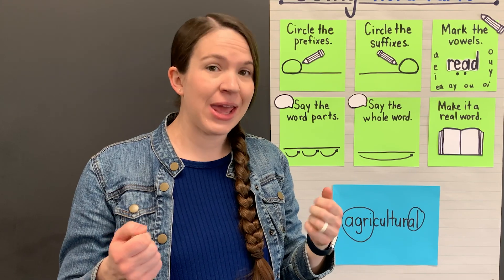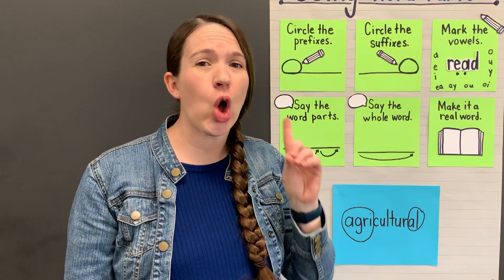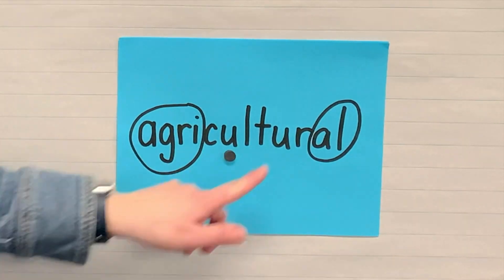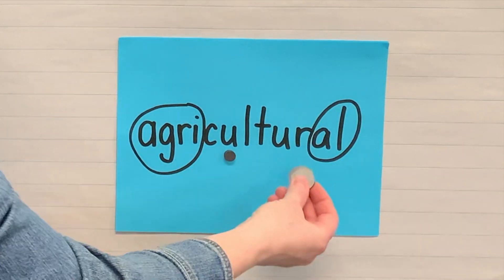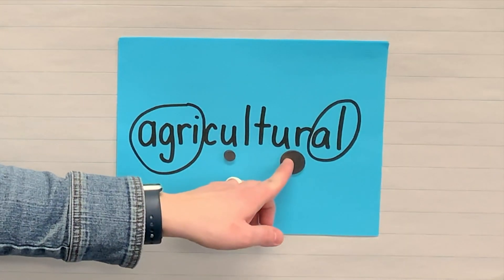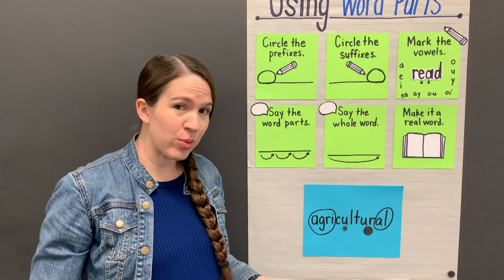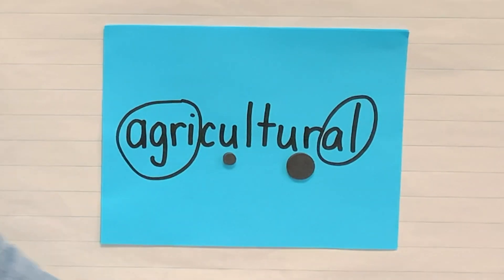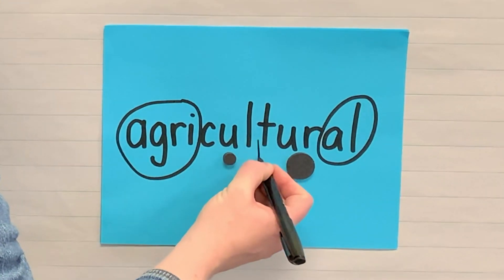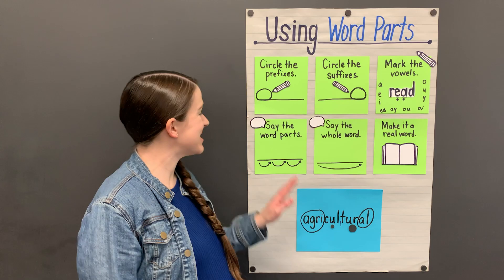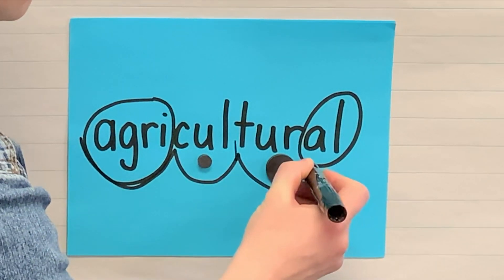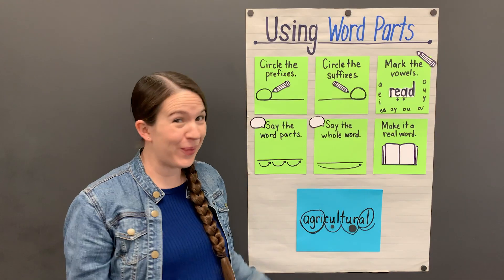Next, let's mark the vowels in this middle part. Vowels help us break words into syllables. Each syllable can have only one vowel sound. We see 'u' and the r-controlled vowel sound 'ur,' which says 'ur.' Since there are two vowel sounds, we'll split this into two syllables. Let's separate these vowel sounds between the consonants 'l' and 't.'